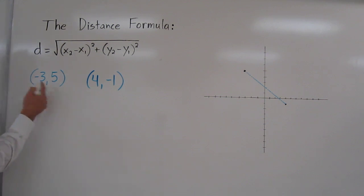Well, let's call this the first point. So this would be the x-coordinate of the first point and the y-coordinate of the first point.